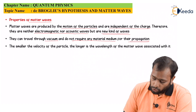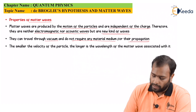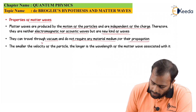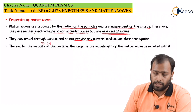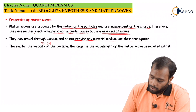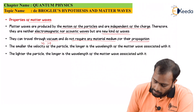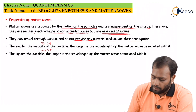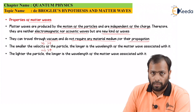The third property: smaller the velocity of the particle, longer is the wavelength of the matter wave associated with it. As v comes down, λ goes up because λ = h/mv. Similarly, the lighter the particle, the longer is the wavelength — as mass comes down, λ goes up. These are conclusions from the equation.